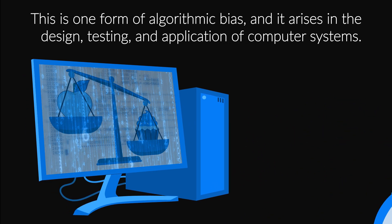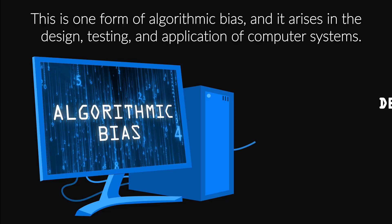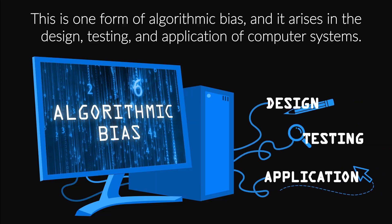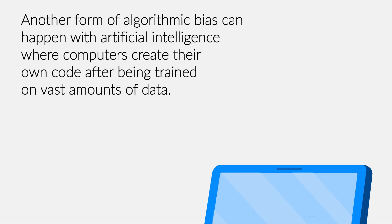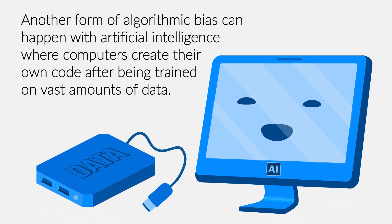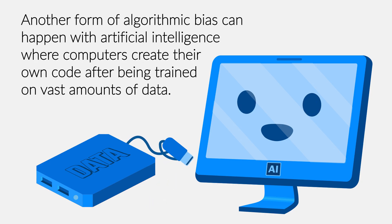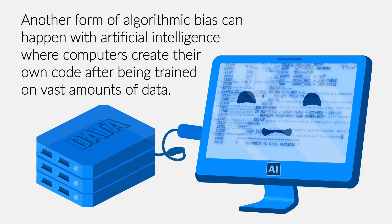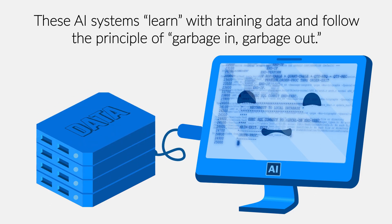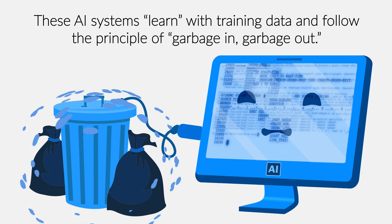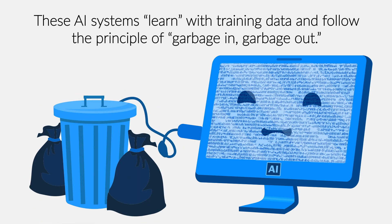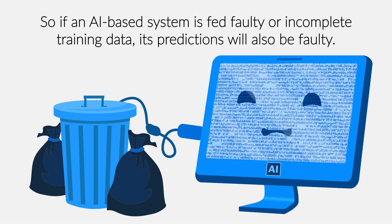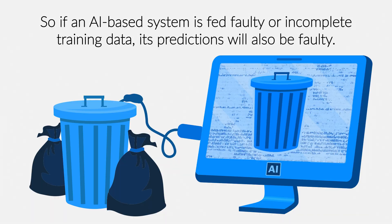This is one form of algorithmic bias, and it arises in the design, testing, and application of computer systems. Another form of algorithmic bias can happen with artificial intelligence, where computers create their own code after being trained on vast amounts of data. These AI systems learn with training data and follow the principle of garbage in, garbage out. So if an AI-based system is fed faulty or incomplete training data, its predictions will also be faulty.